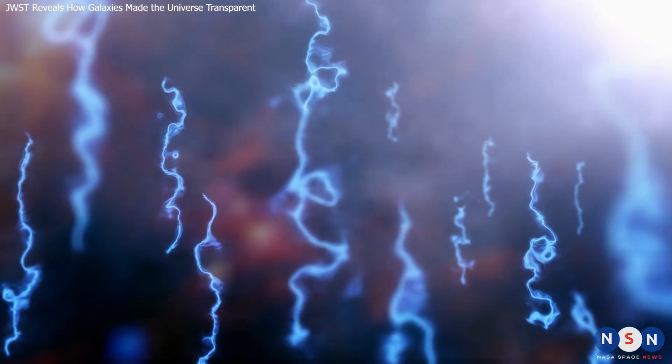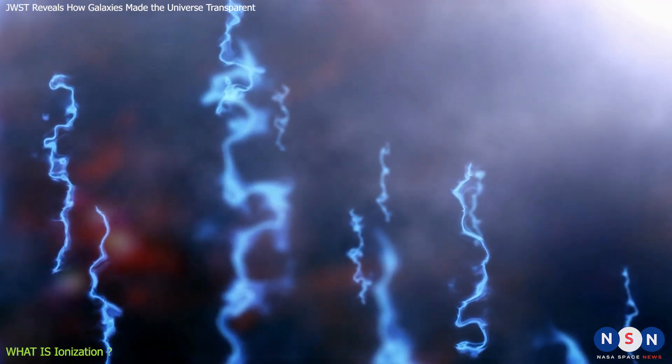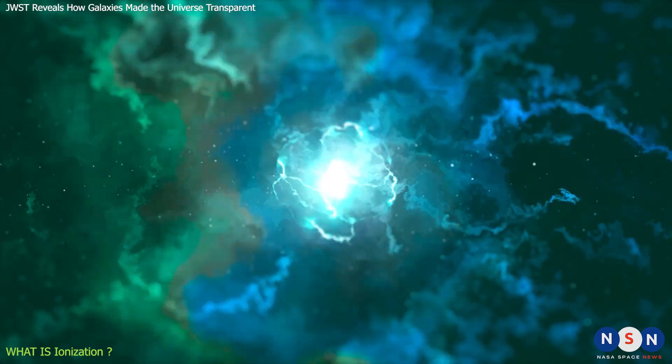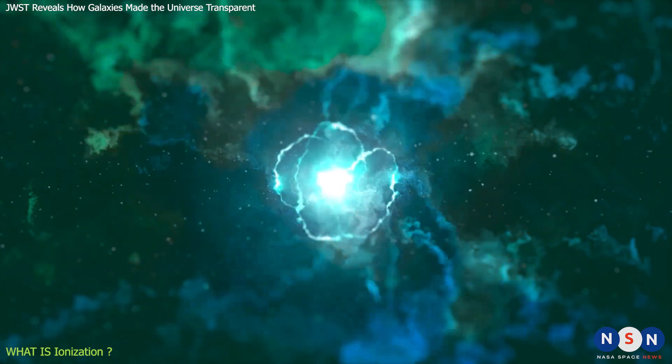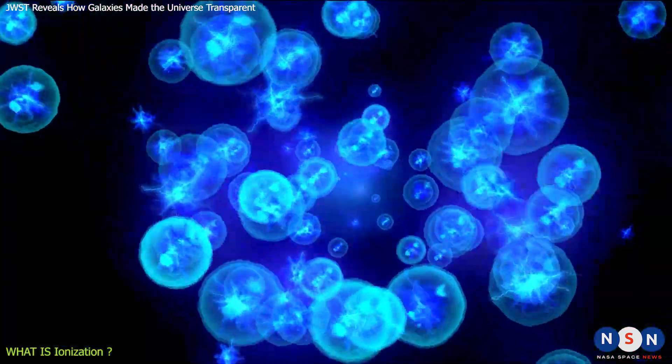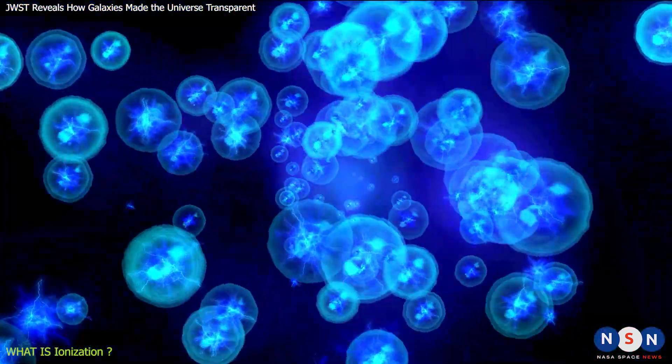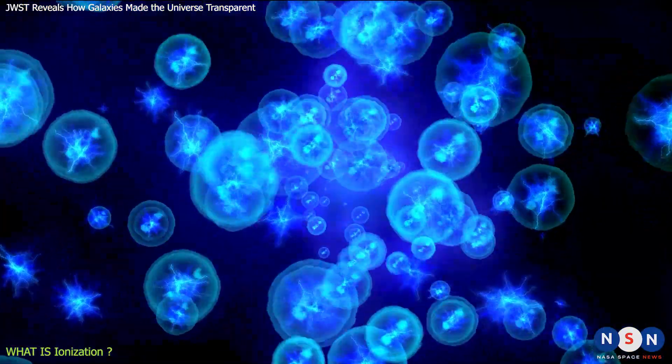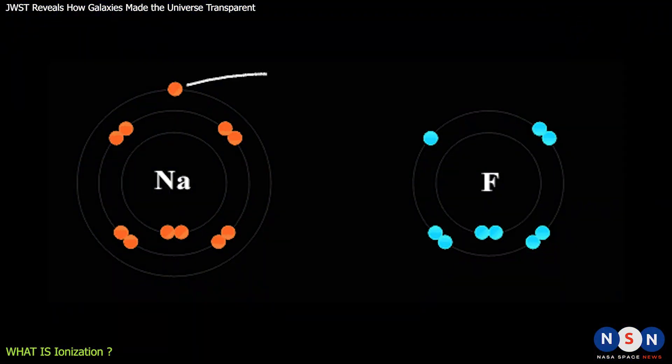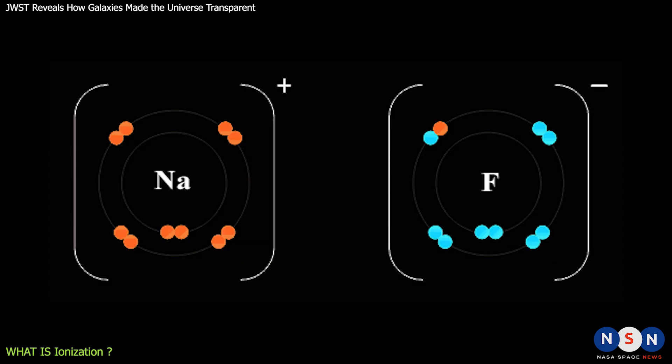Ionization is the process by which an atom or molecule loses or gains one or more electrons, creating electrically charged particles called ions. Ionization can be caused by various factors, such as heat, electricity, or radiation. In particular, ionization can be caused by light when it has enough energy to knock off electrons from atoms or molecules.